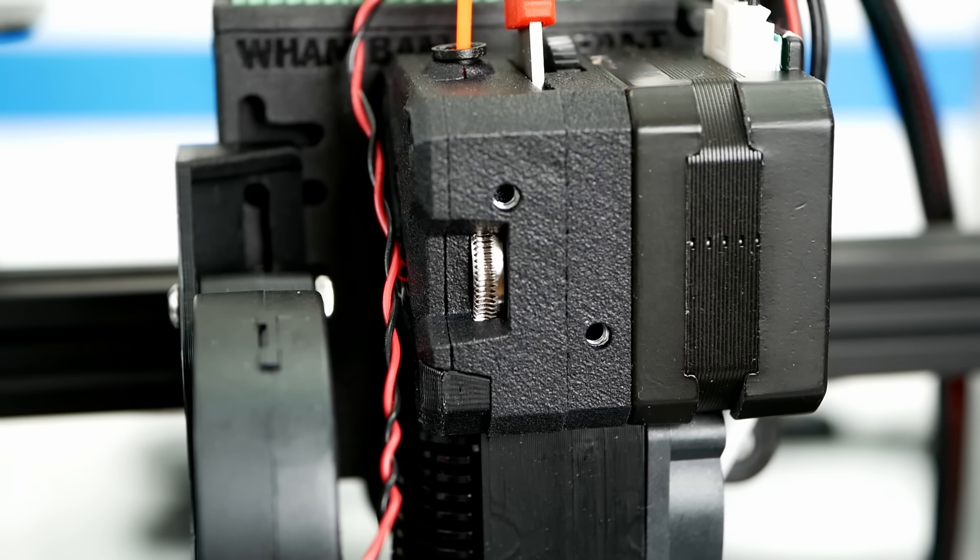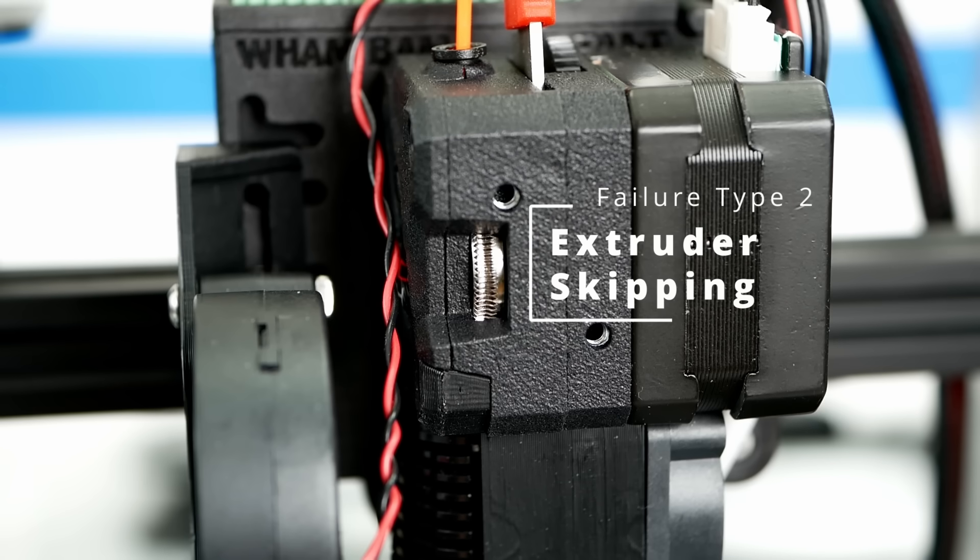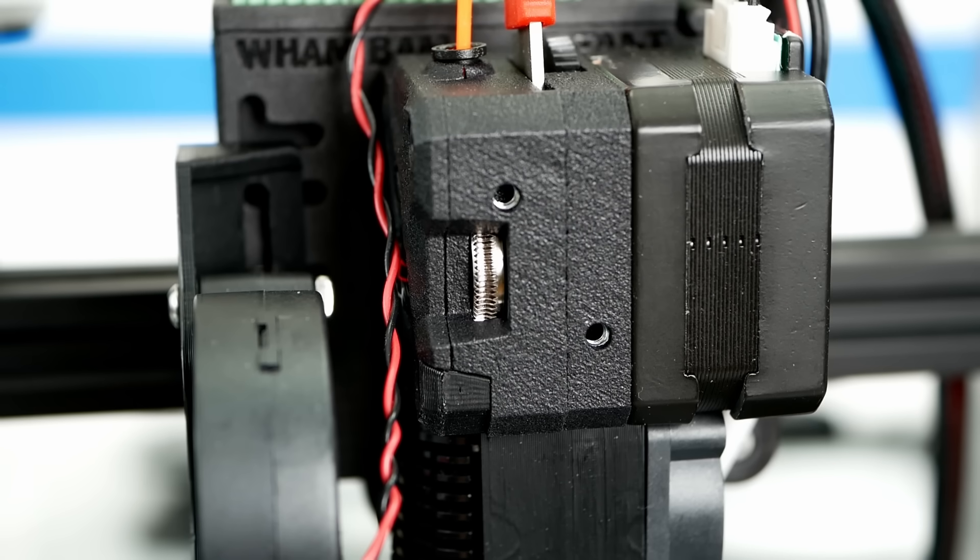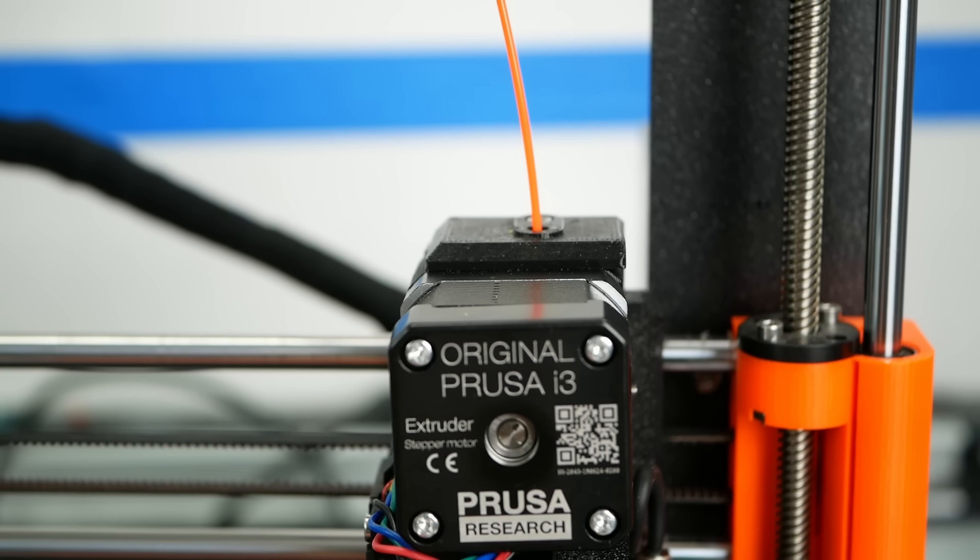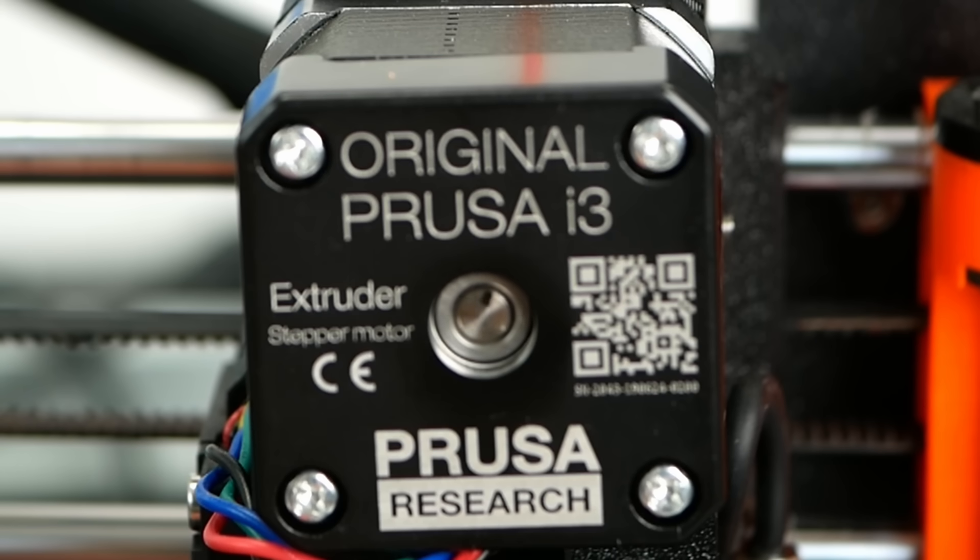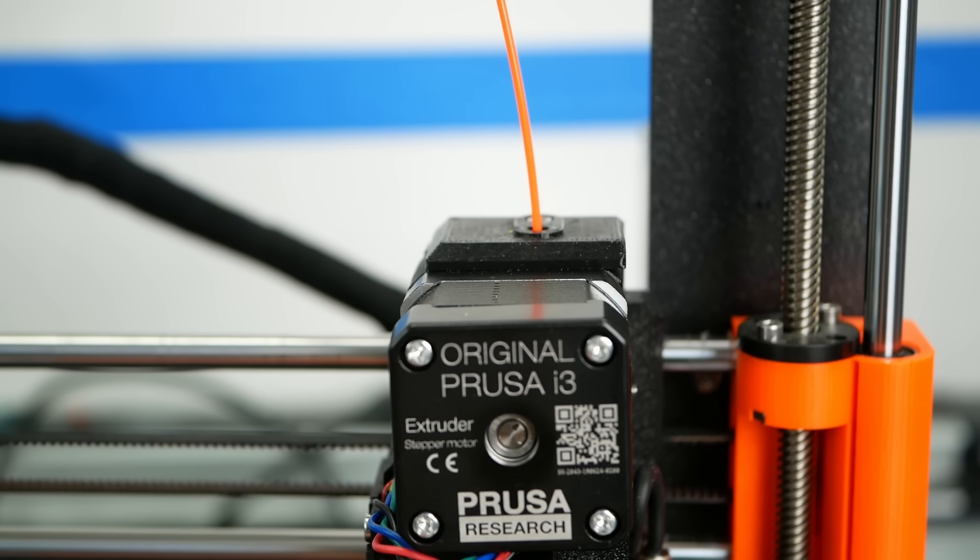If your extruder is not strong enough to push the material forward or to shear the material away, it will skip. Skipping means that the extruder motor loses a step. I usually paint a small line on the motor shaft to quickly see if the extruder is skipping because that's when the shaft doesn't turn continuously anymore. When only the filament jumps around but the shaft turns, it usually means grinding.